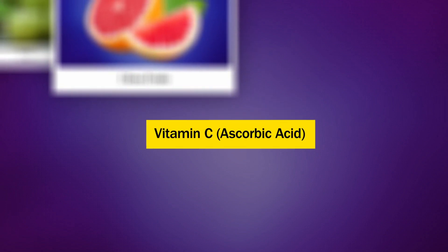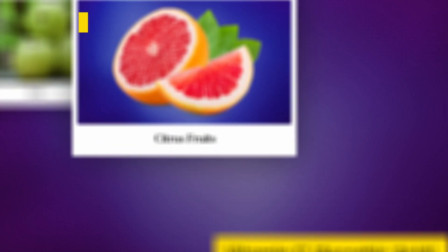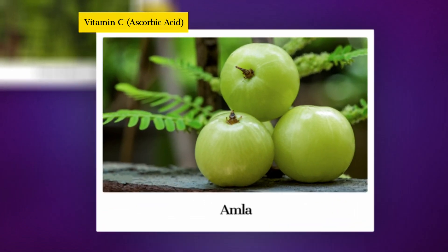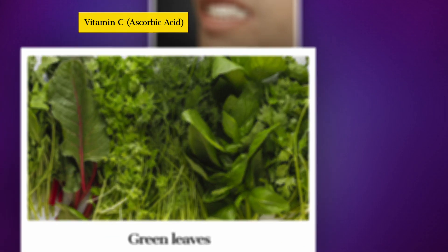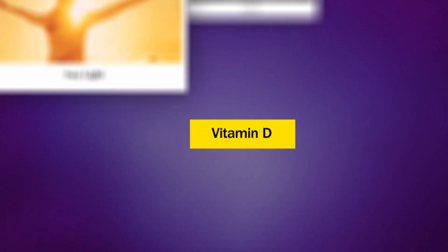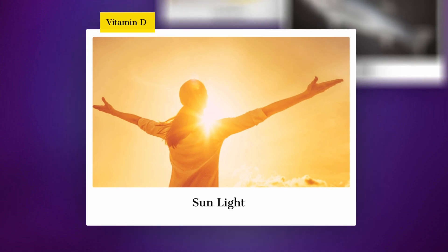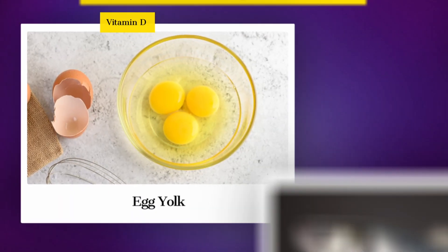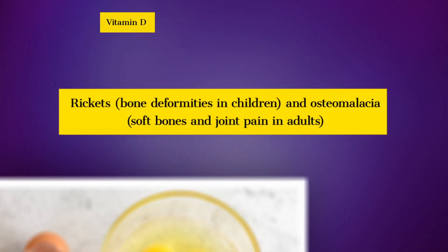Vitamin C (Ascorbic acid): Sources — citrus fruits, amla, and green leafy vegetables. Deficiency disease — scurvy and bleeding gums. Vitamin D: Sources — exposure to sunlight, fish, and egg yolk. Deficiency disease — rickets and bone deformities in children, and osteomalacia (soft bones and joint pains) in adults.